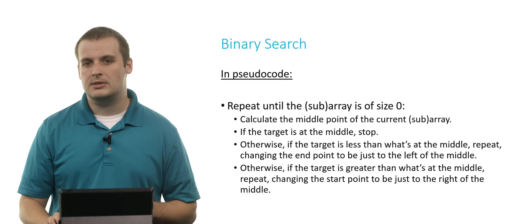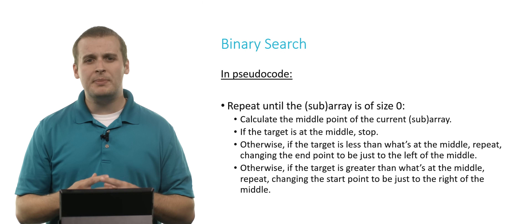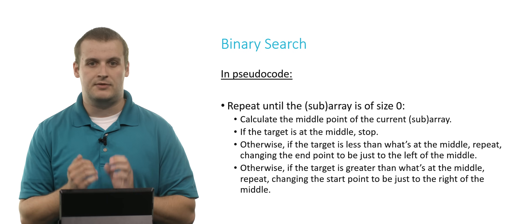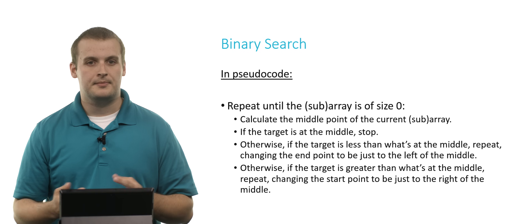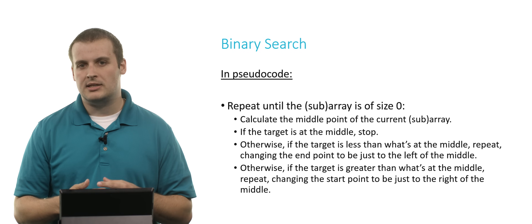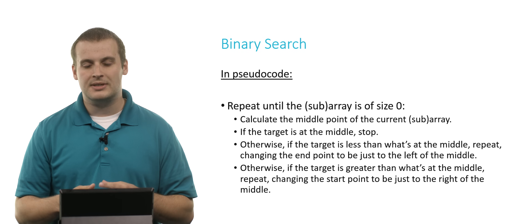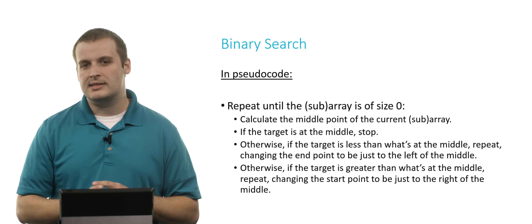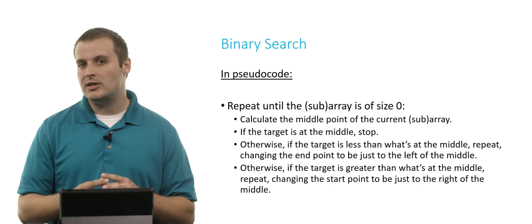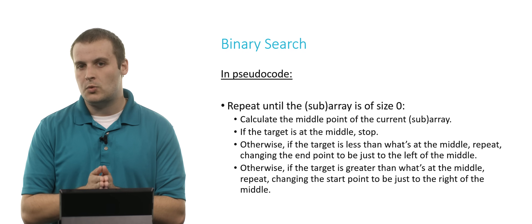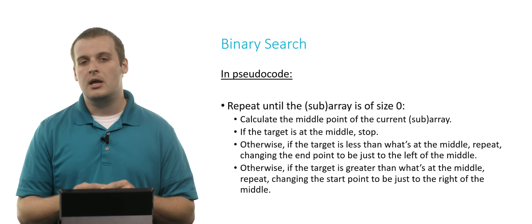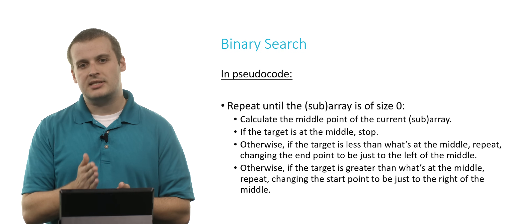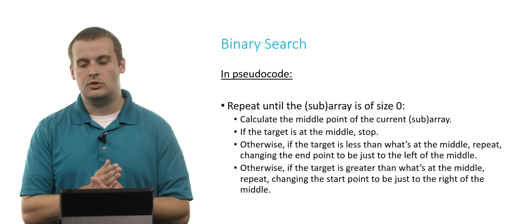So what are the pseudocode steps for binary search? We repeat this process until the array — or subarrays, smaller pieces of the original array — is of size zero. Calculate the midpoint of the current subarray. If the value you're looking for is at that element, stop — you found it. Otherwise, if the target is less than what's at the middle, repeat the process again but change the endpoint to be just to the left of where we just looked.